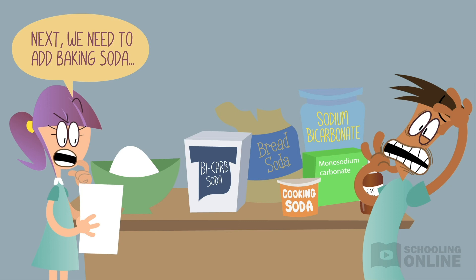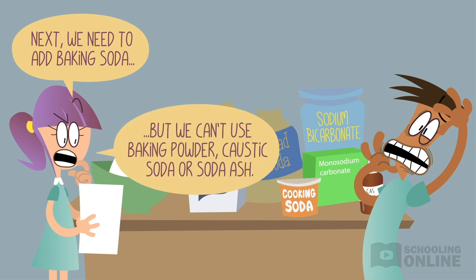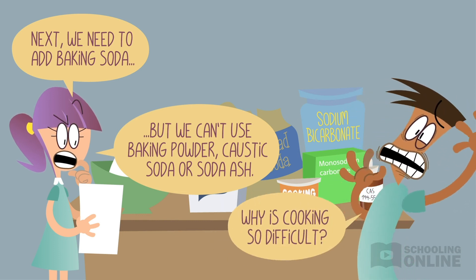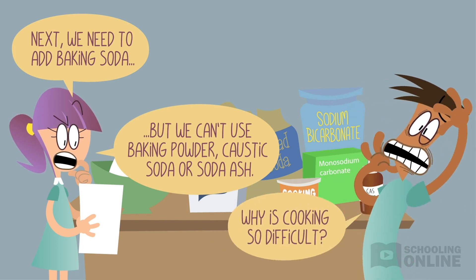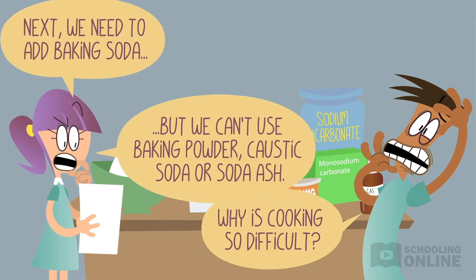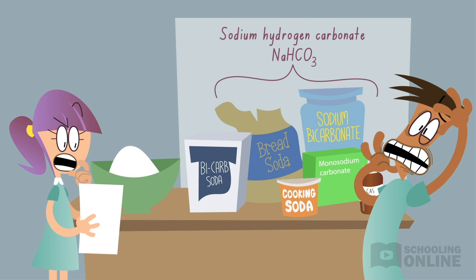But why is all of this important? Well, if everyone uses a different name to describe the same thing, chemistry would be even more confusing. Therefore, the purpose of nomenclature is to ensure every chemical has just one name and chemical formula. This helps avoid ambiguity and enables effective communication.